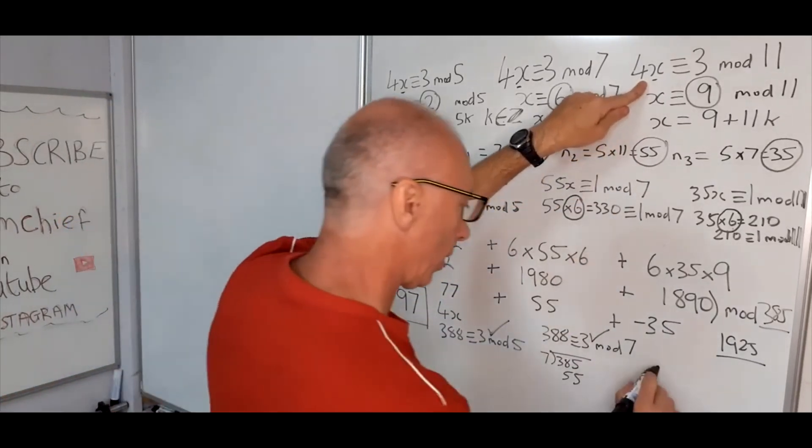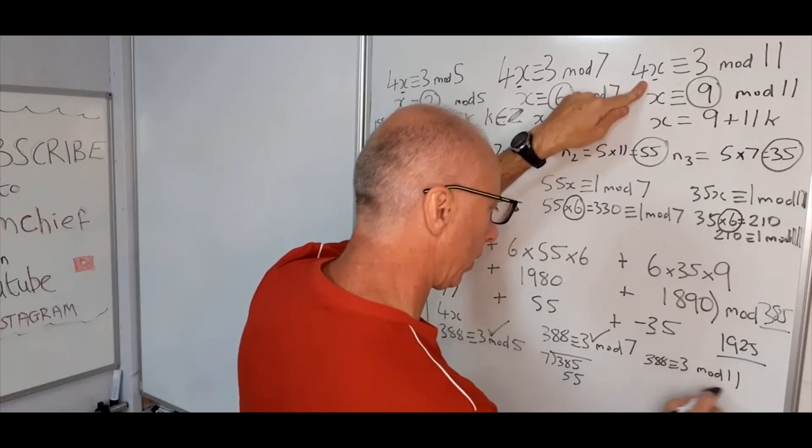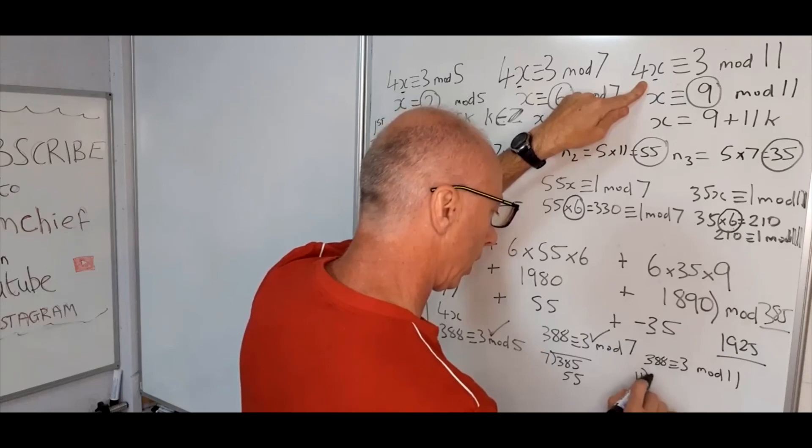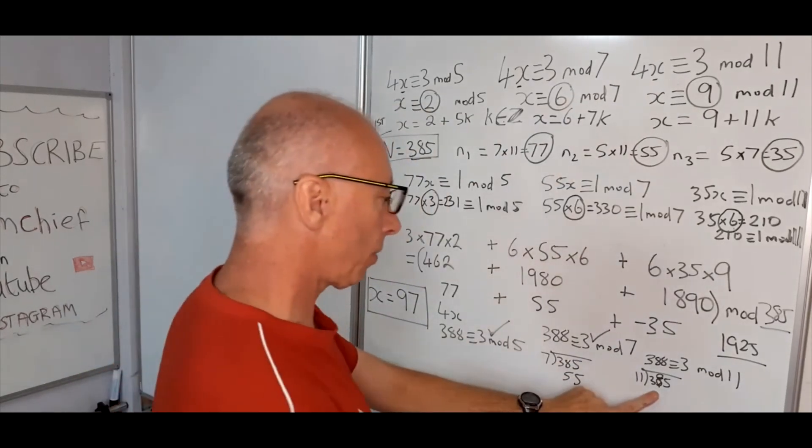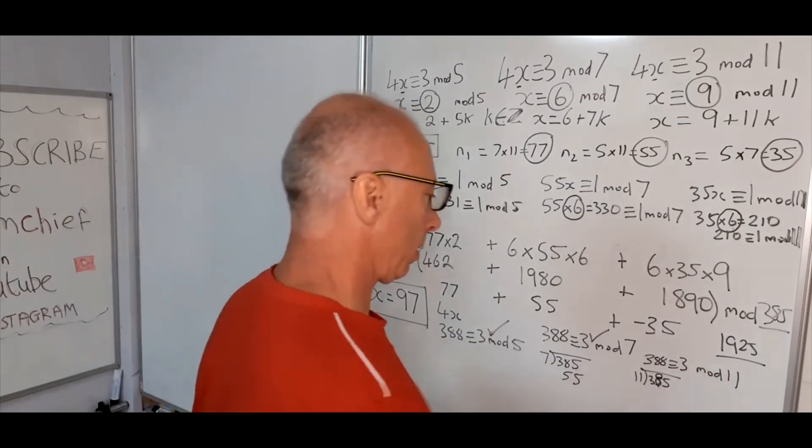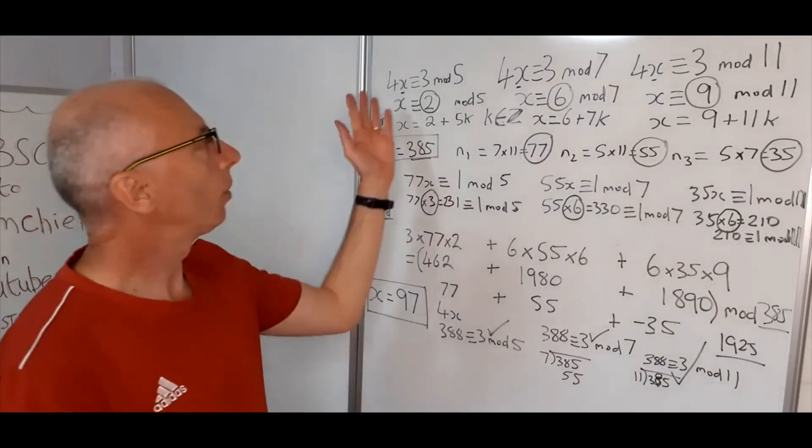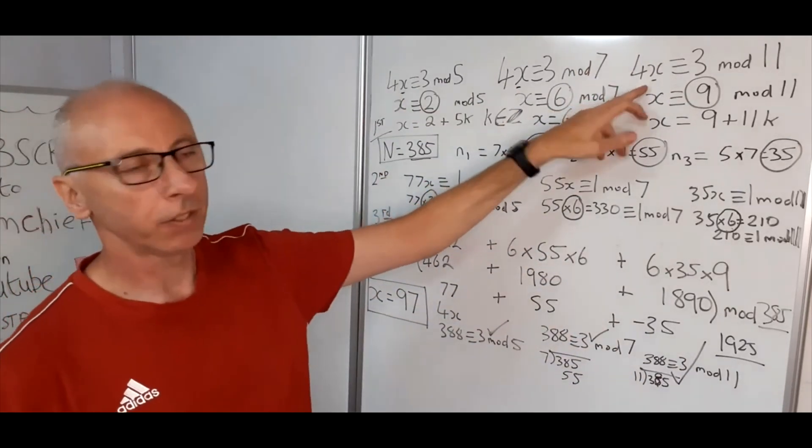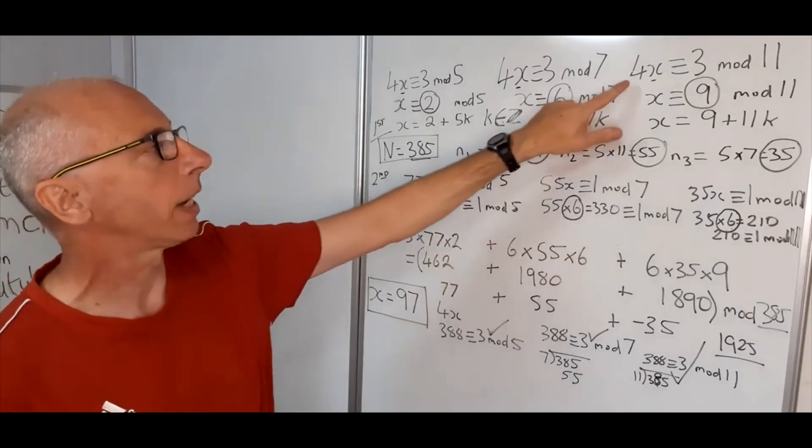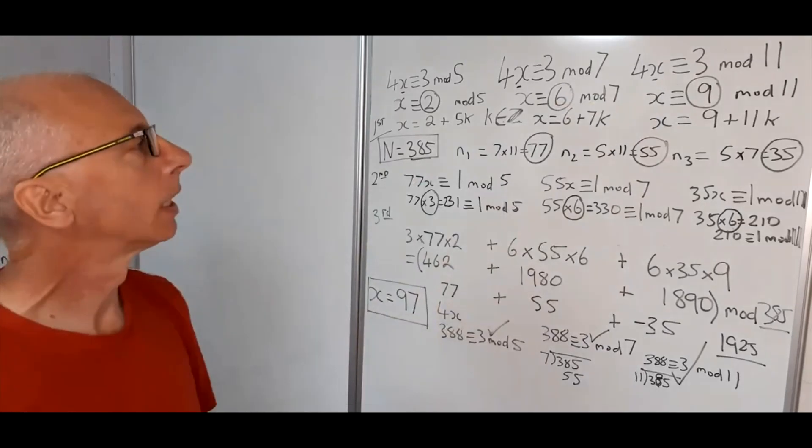And for the last one, 388 is congruent with 3 modulo 11. So 11s into 385, we've got 330 with 55 remainder. There we go, that's checked. And that's how we solve the linear congruence for 3 equations with the multiple of the x in here. If you check the link in the description below, I've got some videos where some different combinations of these and without the coefficient in the front as well.